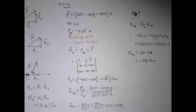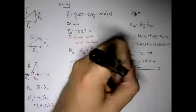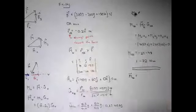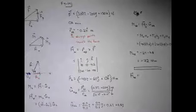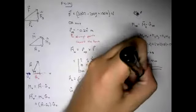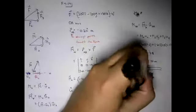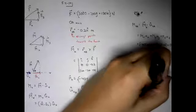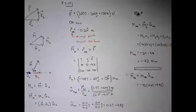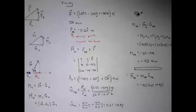Our final step — though the problem only asks for the component — would be to express this moment in vector form. To do that, take the magnitude of the moment, negative 72, and multiply it by the unit vector 0.6i plus 0.8j. I'll let you solve that yourself and see what interesting result you get.